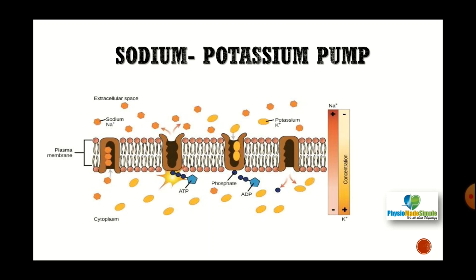Once again, if sodium ions are present inside the cell, they attach to the interior part of the carrier protein. It changes shape, moves to the external part, and the phosphate group attaches while ADP is released, producing energy. With the breaking down of ATP to ADP and inorganic phosphate, sodium and potassium ions are transported across the membrane against their concentration gradient — since sodium ions are more numerous outside and potassium ions are more numerous inside. The pump works to remove sodium to the exterior and bring K+ to the interior.